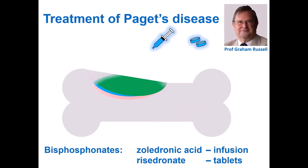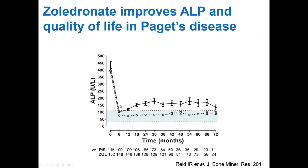However, what they can't do is reverse the deformity which may have already formed. Zoledronic acid significantly improves alkaline phosphatase and also the quality of life in Paget's disease. I'll show you the effect of zoledronic acid on alkaline phosphatase here as compared to risedronate.